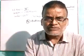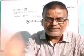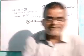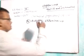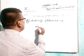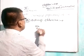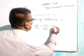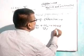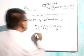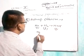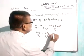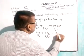Sodium reacts with chlorine: Na + Cl2 → NaCl. Magnesium reacts with chlorine: Mg + Cl2 → MgCl2.